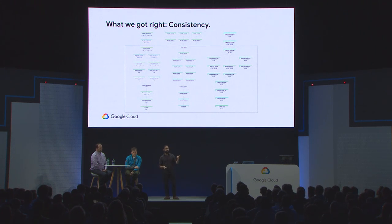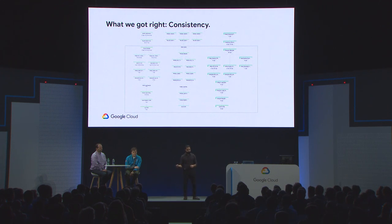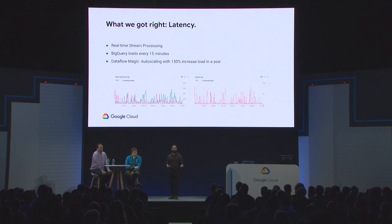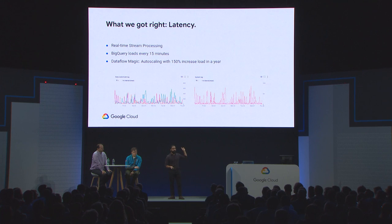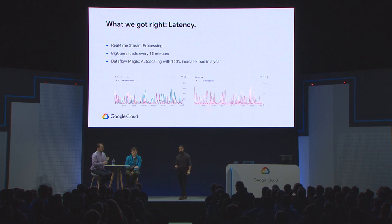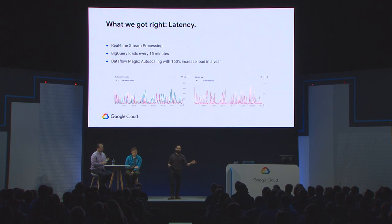Thanks to the unified stream and batch processing model in Beam, we reuse the same core business logic for any raw data we process — real-time events from Kafka, historical data that needs backfilling, or events from the dead letter queue. This business logic is written in pure Scala and uses a popular library from Spotify called Scio. On latency: data that previously took days to be available for query is now available in real time. Our watermark lag typically stays below two minutes, which is great. Load to BigQuery is batched at 15-minute intervals, but those are triggered from the same pipeline, maintaining Dataflow's event delivery guarantees through to the warehouse.